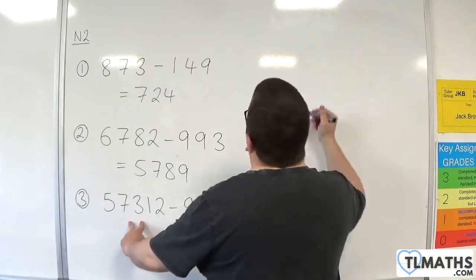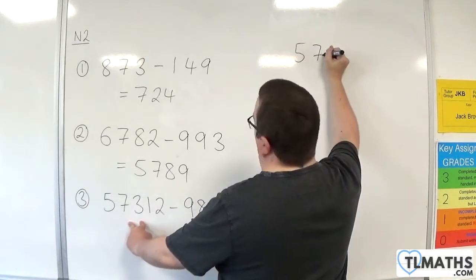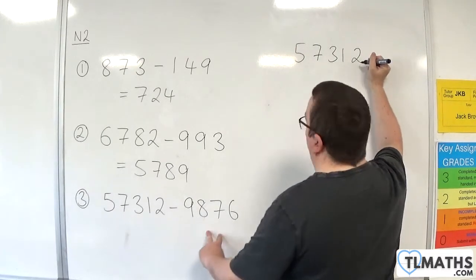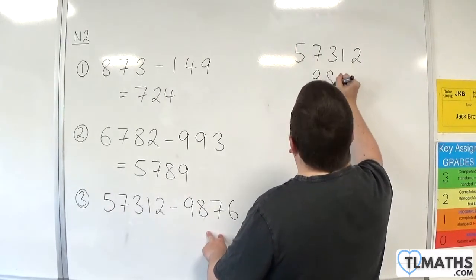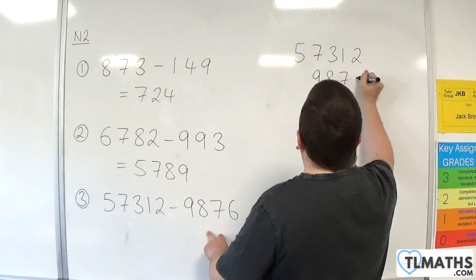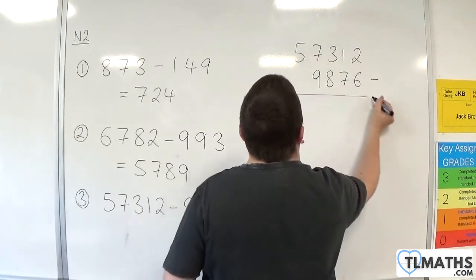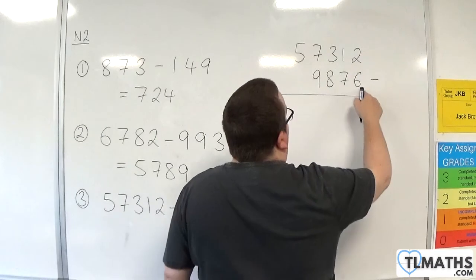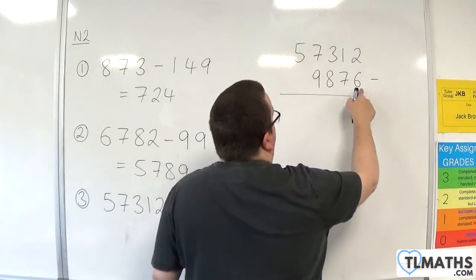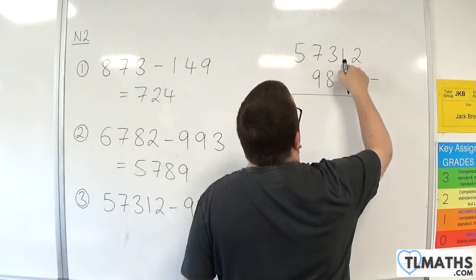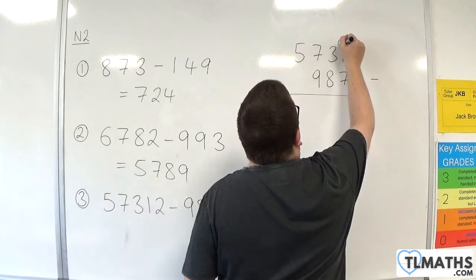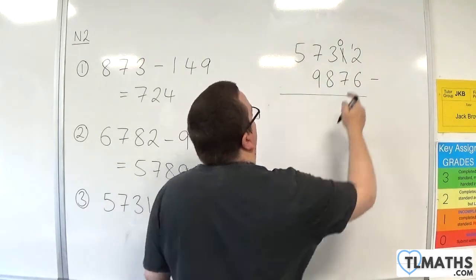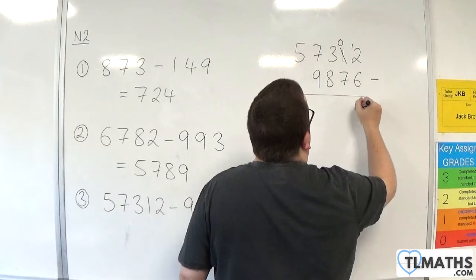Last up, we have 57,312 take away 9,876. 2 take away 6 — I can't do without going into negatives, so I'm going to borrow 1. So the 1 becomes 0, and the 2 becomes 12. 12 take away 6 is 6.